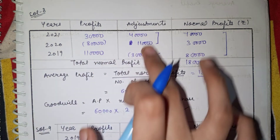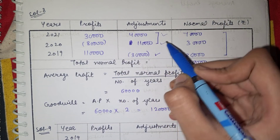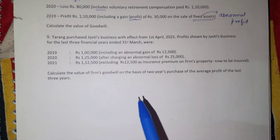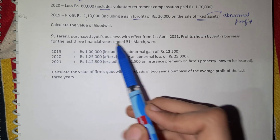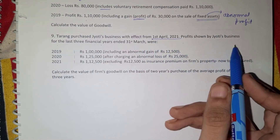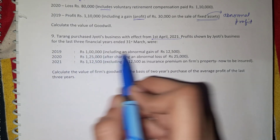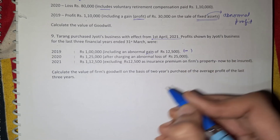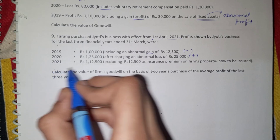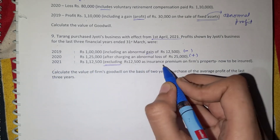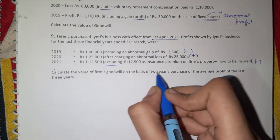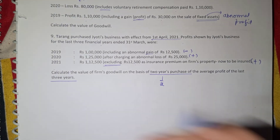Remember: if the adjustment is wrong, the whole question is wrong. If there is an abnormal loss, add it; if there is an abnormal profit, subtract it. Question 9: Tarang purchased Jyoti's business with effect from 1st April 2021. Jyoti's profits for the past 3 years: 2019 had a profit with an abnormal gain (so minus); 2020 had a profit with an abnormal loss (so plus); 2021 had a profit excluding 1,25,000 as insurance premium on the firm's property now to be insured (so add it back). Goodwill is 2-year purchase of the last 3 years average profit.